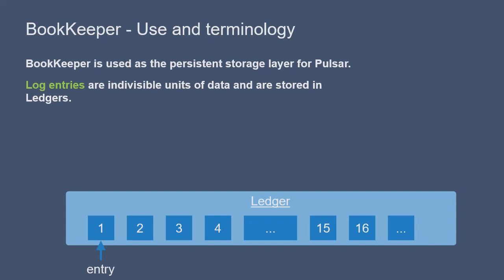Bookkeeper stores log entries or records in ledgers, and each log entry stored in a ledger is an indivisible unit of data. Ledgers store an ordered sequence of log entries. They are append-only and immutable data structures. In other words, data cannot be changed, and this is an important feature for real-time message streaming.